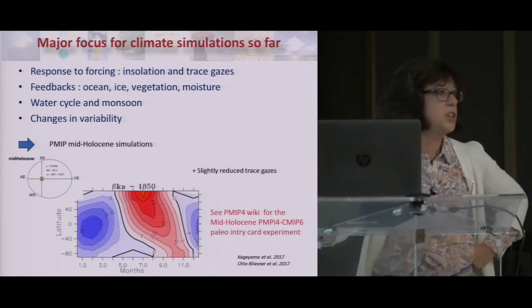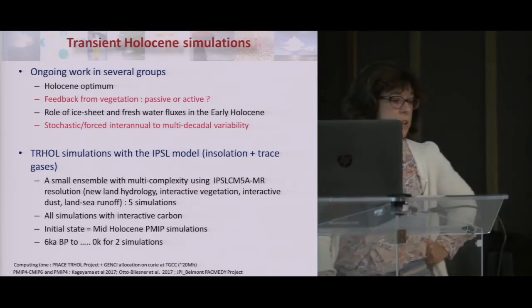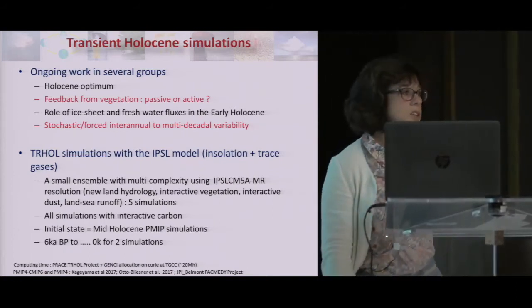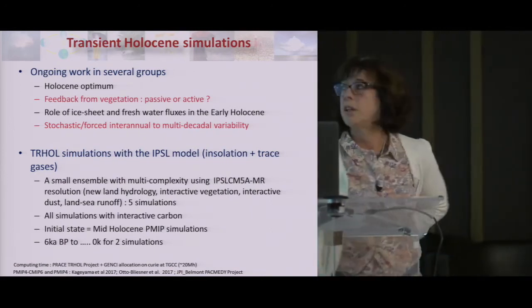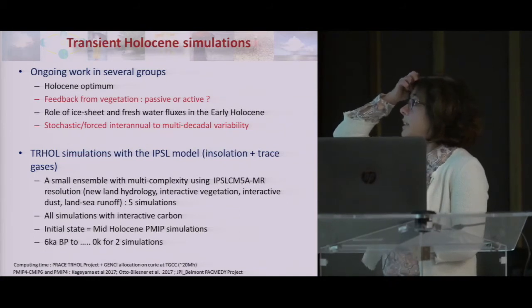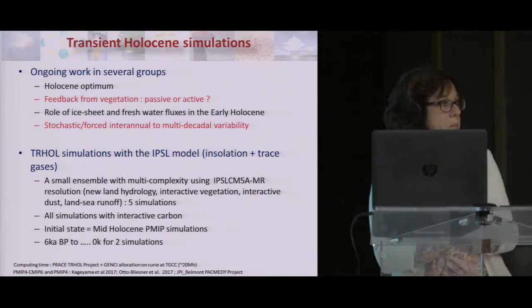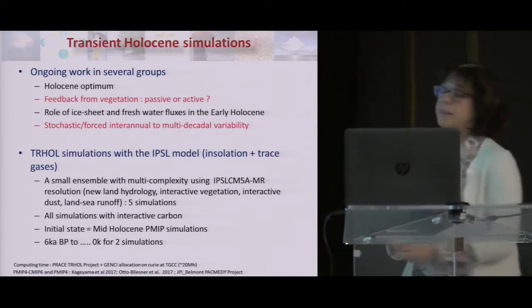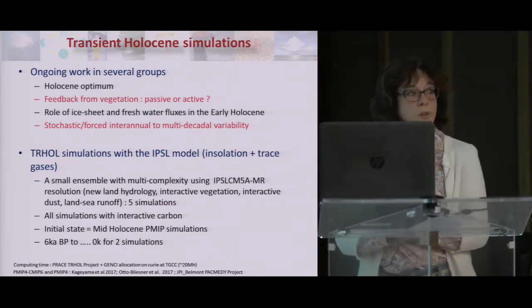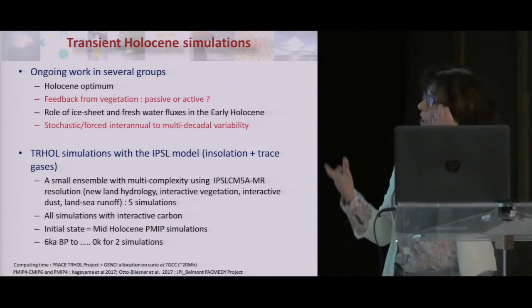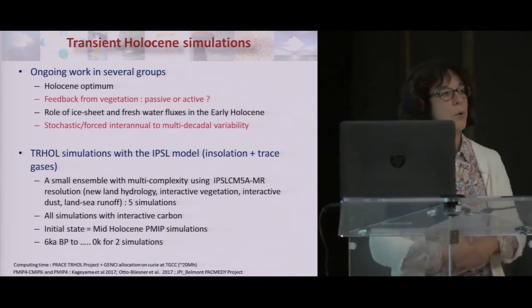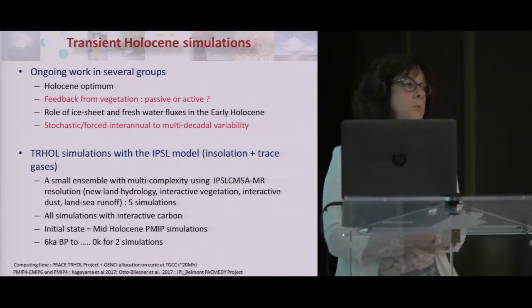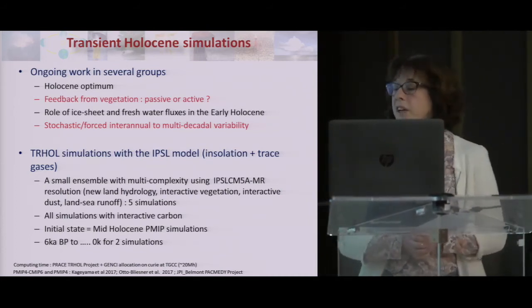What's going on for several years now is that several groups can run synchronously transient Holocene simulations. Some have even done more — for example, with the NCAR model there is a full deglaciation available. The questions in these groups are: can we better characterize the Holocene optimum and its timing in different regions? What's the feedback from vegetation — is it passive or does it trigger some events? What's the role of the ice sheet and freshwater fluxes in the early Holocene? And is interannual to multidecadal variability forced or just internal?